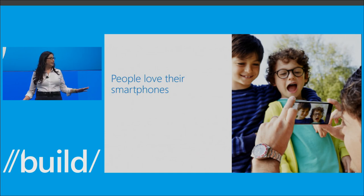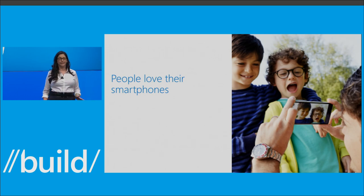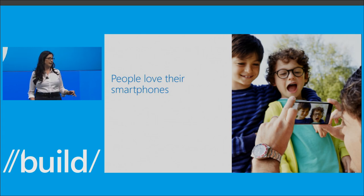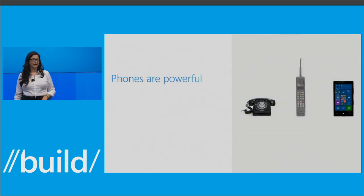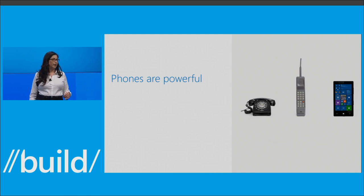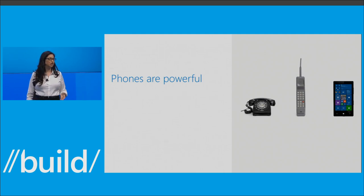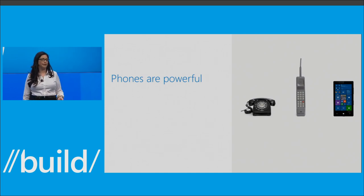There's one thing we all share, and that's our love for phones. They're always at our side. In Japan, they had to create waterproof phones because 90% of teens would not take a shower without their phone. Phones are very powerful — the processing power of a phone is rivaling that of a desktop PC. But even with this processing power, sometimes it's just not enough. Phones are great when you're on the go, but the form factor can be too limiting.